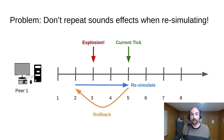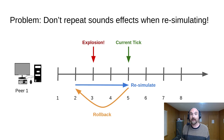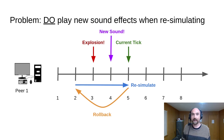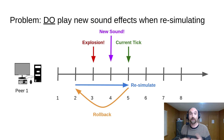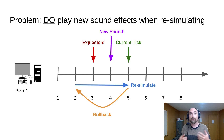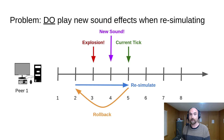But let's say during the rollback, something new happens because we have new input and it turns out that we should have played a new sound effect on tick number 4. Well, we do want to play that new sound effect. So it isn't as simple as just not playing sound effects when rolling back. We need to only skip those exact same sounds which we already played.